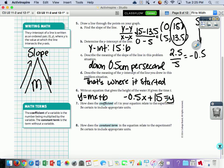How does the coefficient of t in your equation relate to the experiment? Okay. So again, negative 0.5 is the rate, is the slope. So the constant term is 15. The constant term is our starting value or our y-intercept.